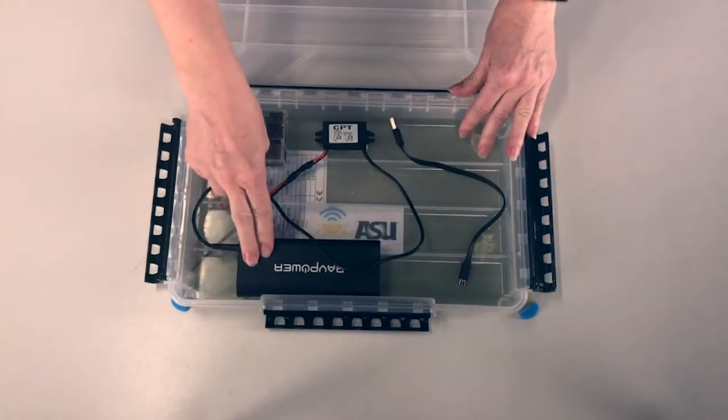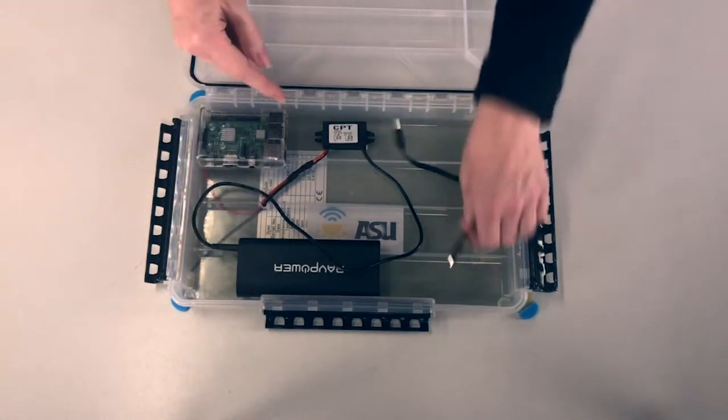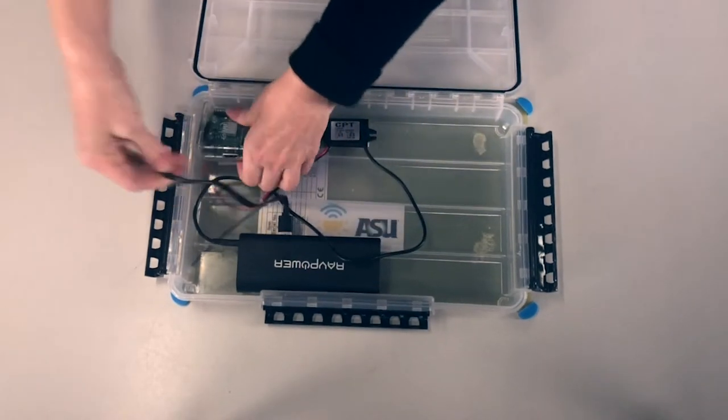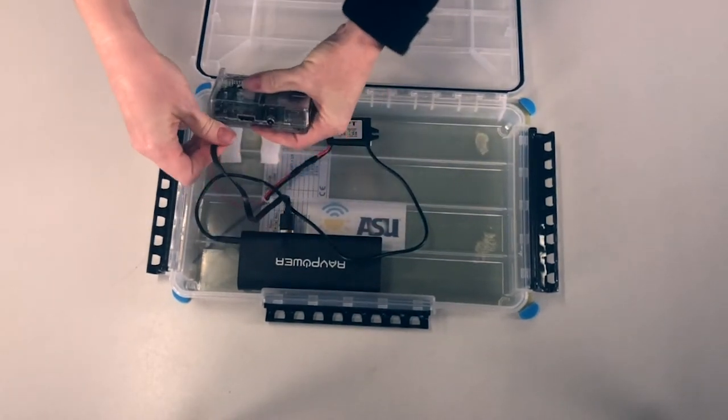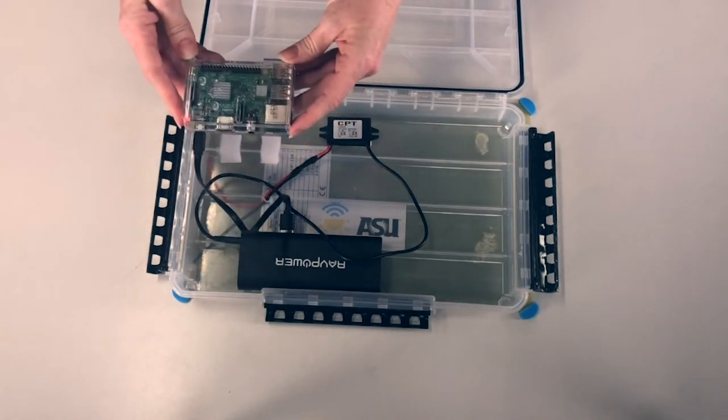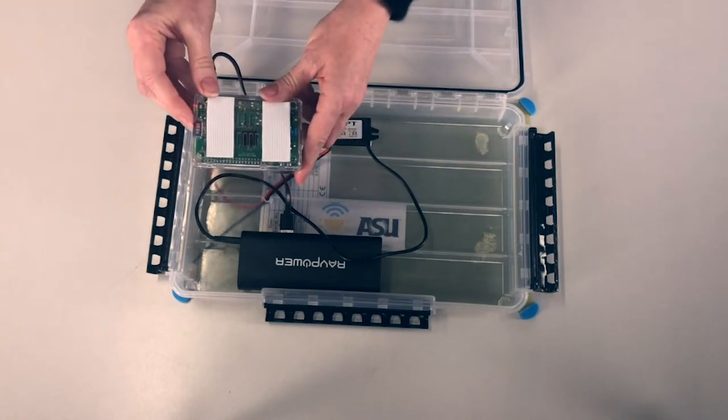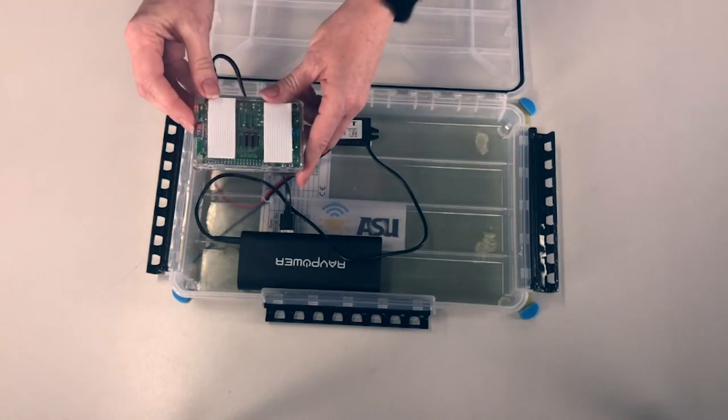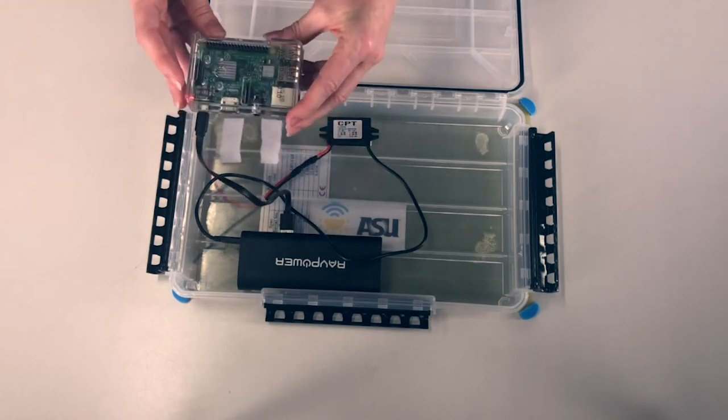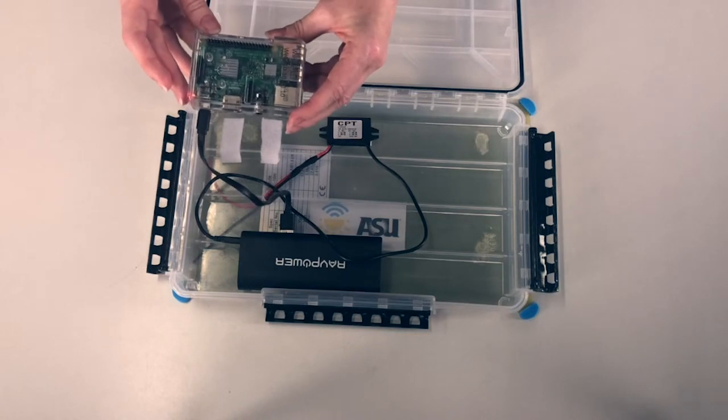This battery both stores the power off of the solar panel and gives power to this microcomputer that's called a Raspberry Pi. The entire contents of the library are stored on this microSD card, and there's some code on this microSD card that tells the Raspberry Pi to start offering up an offline localized Wi-Fi hotspot.